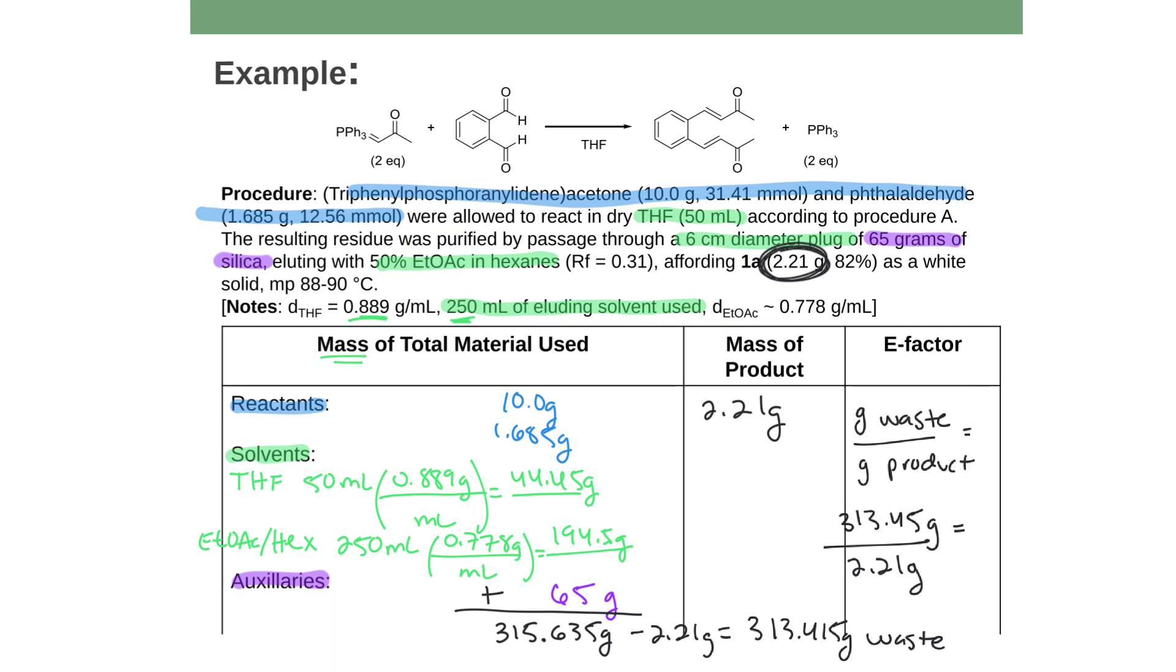That's going to give me my E factor. So how much waste over how much product. And again, your waste is going to be the mass of everything you used minus the mass of the stuff that you got out of it, the product. And if I do that, I see that my E factor is going to be 141.8. That is my E factor. That's not great. That's saying that I produced 141.8 times more waste than I did actual product. That's a lot of waste.